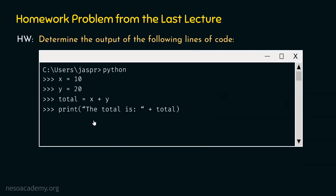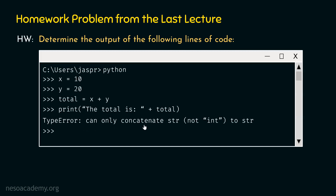This is the homework problem from the last lecture. The problem was to determine the output of the following lines of code. If you ran this code, you might have gotten this error: TypeError — can only concatenate str, not int, to str. You might be wondering why we are getting this error, so let me explain.